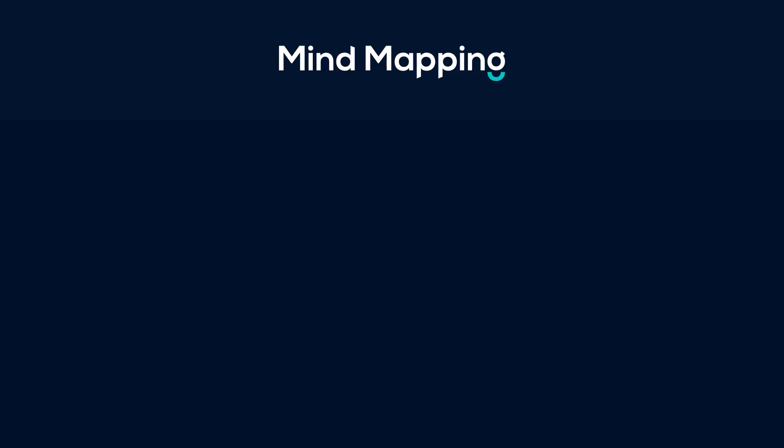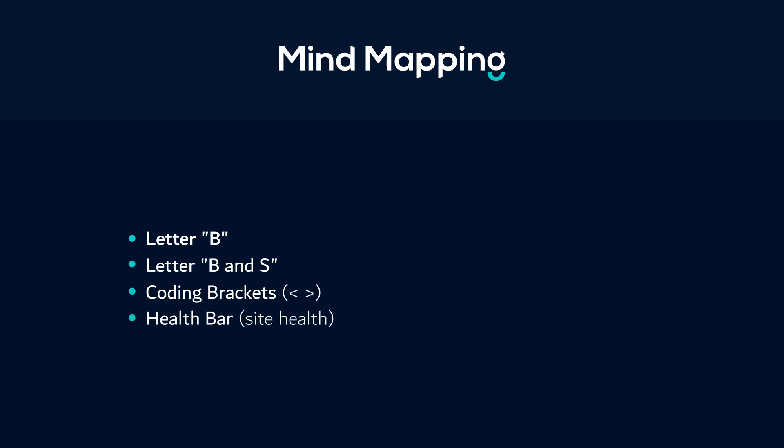Now using these points as a reference, let's continue with the mind mapping process. To design our logo we can use different elements like the initial letter B, or the combination of letters B and S. We can also use coding brackets to represent their software development services, a health bar since the company provides site health services, and small particles to represent bits or bytes. To emphasize the word salt we can use salt crystals.